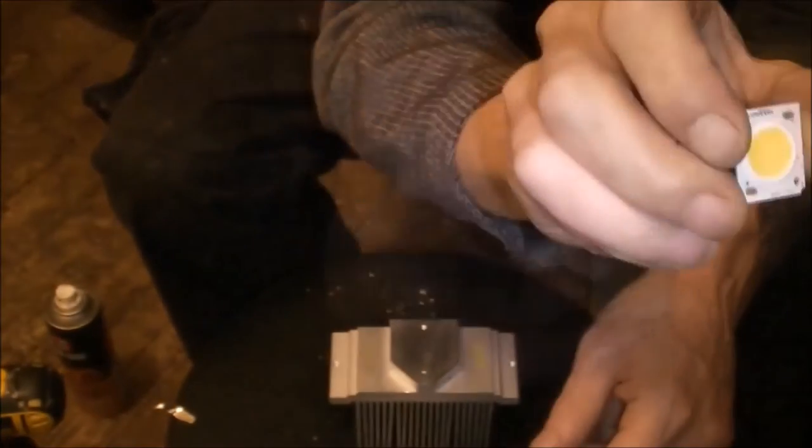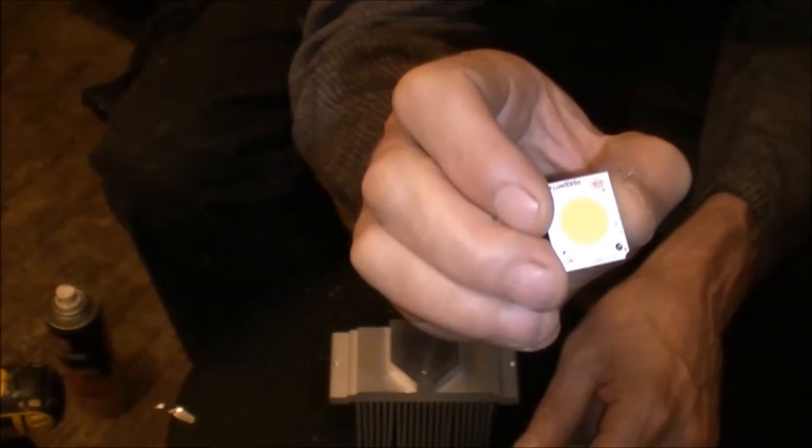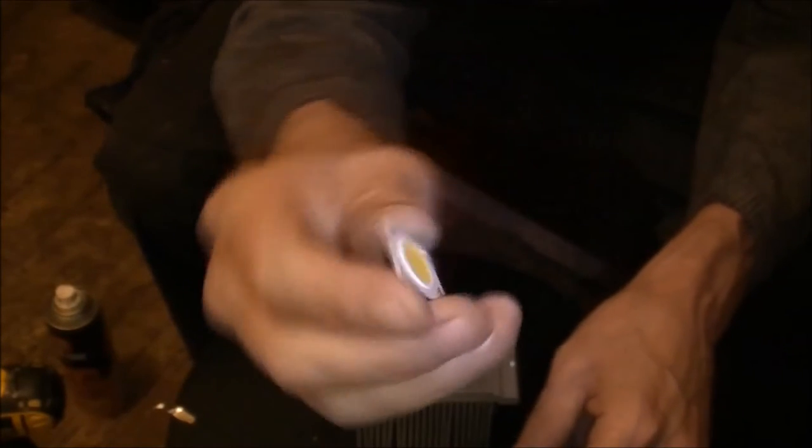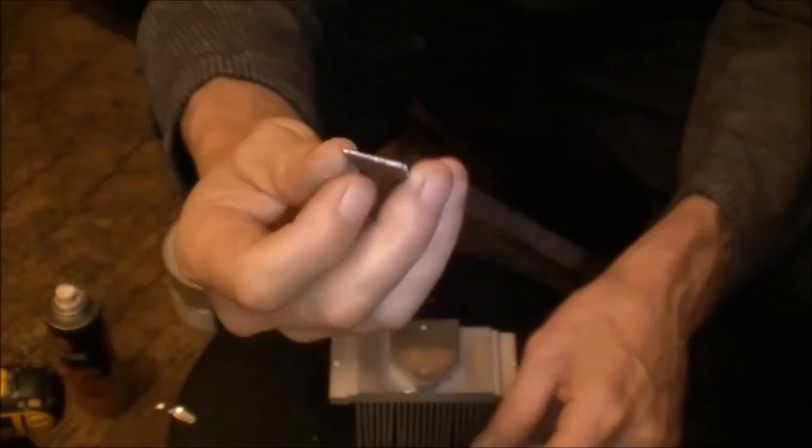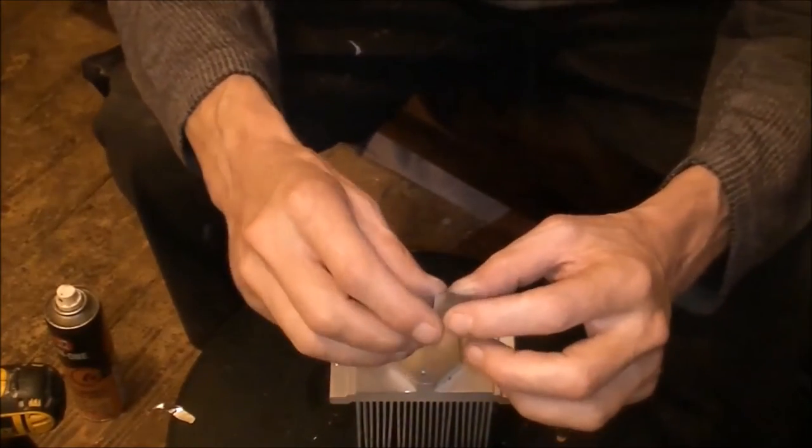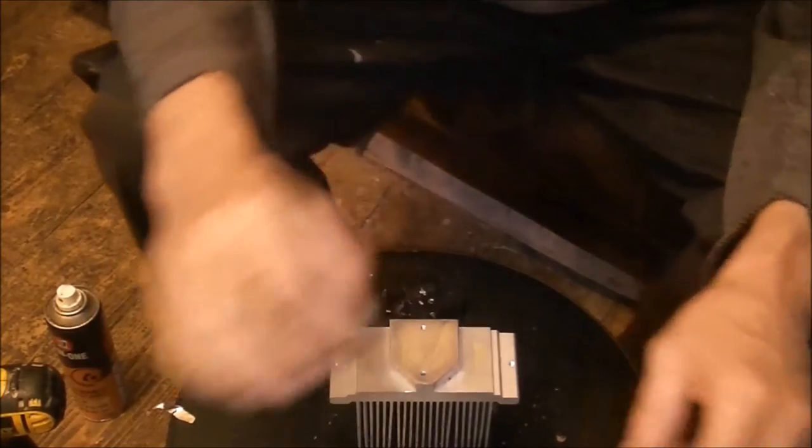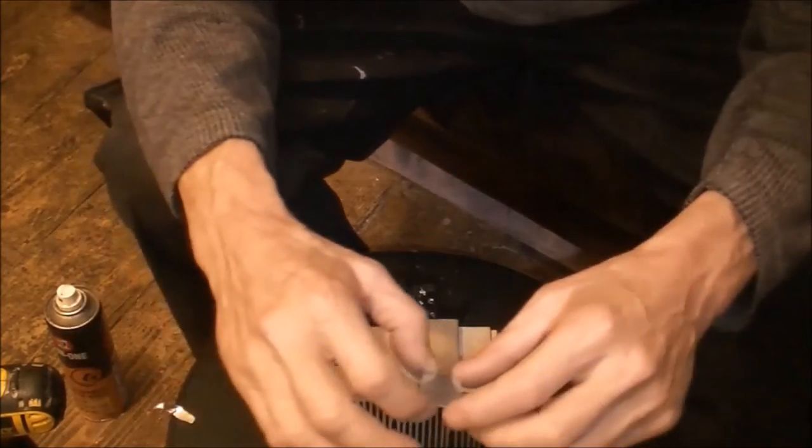Okay, and here's our COB on this occasion. Somewhere about there you can see that little writing. It's a Luminus Luxeon 1205 and this is in a 3000K with a CRI of 90.